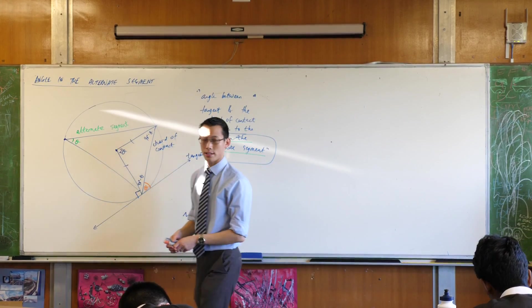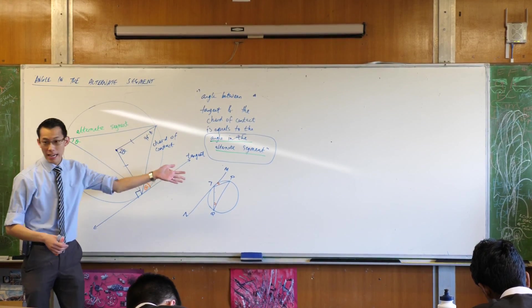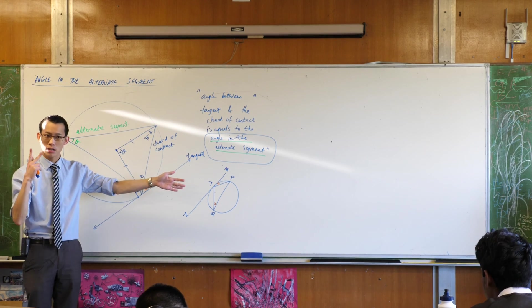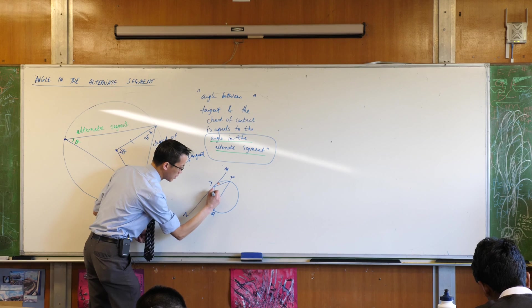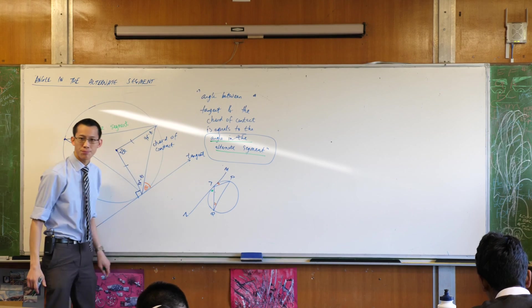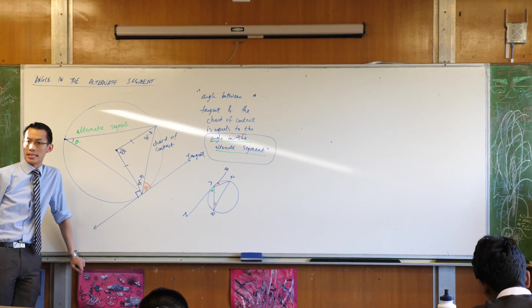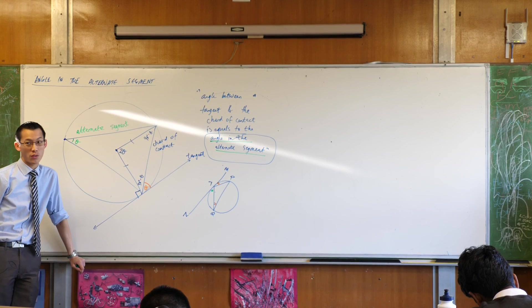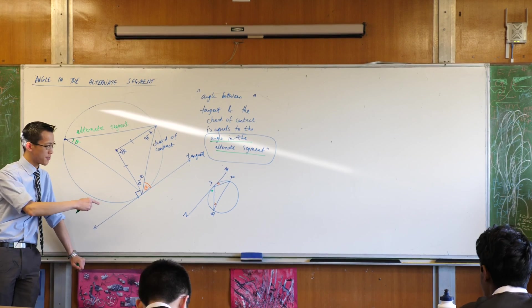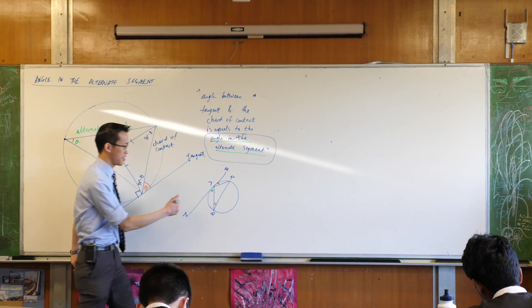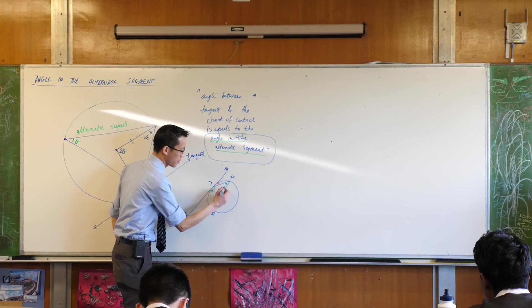But there's another angle in the alternate segment because your tangent has two chords of contact. Two of them. Let me get my green now. See this guy over here? Let me put a big fat green dot. There you go. There's another angle between the tangent. It's just a different chord of contact. So what is the angle in the alternate segment for this guy? It's TPQ, isn't it? Over there.